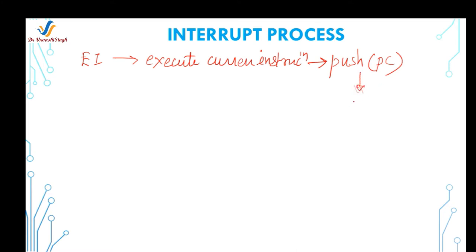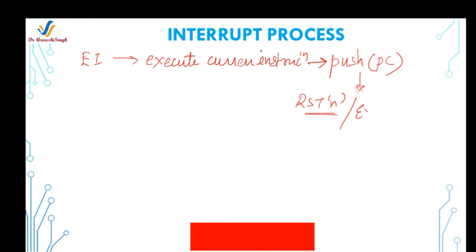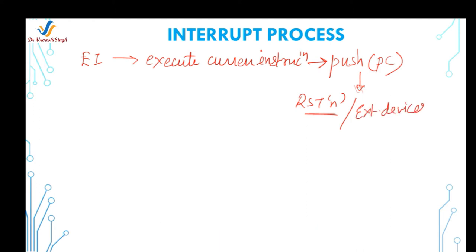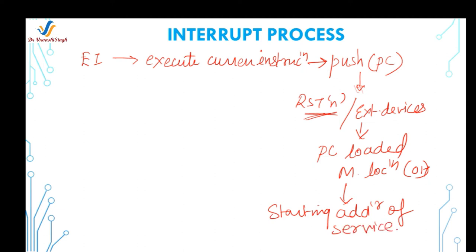After saving to the stack, the program counter will be loaded with a specific memory location on page 0. For most interrupts, RST instructions handle this. However, the INTR interrupt does not have a predefined RST instruction or page 0 memory location — external devices are required to insert these instructions. The program counter is then loaded with the page 0 memory location where the starting address of the service routine is stored.